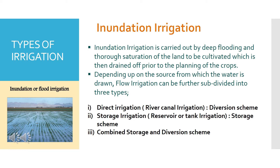Inundation Irrigation is carried out by deep flooding and through saturation of the land to be cultivated, which is then drained prior to the planting of the crops.